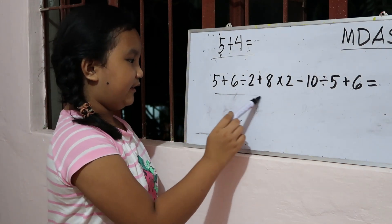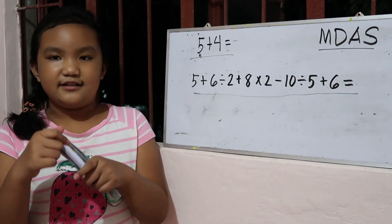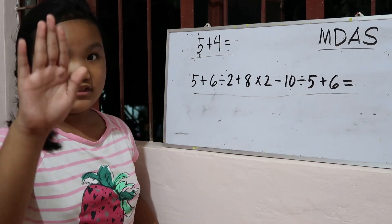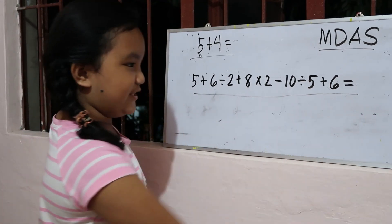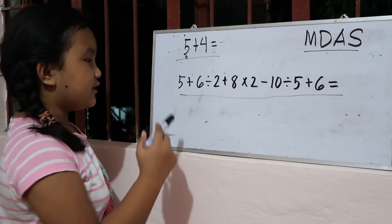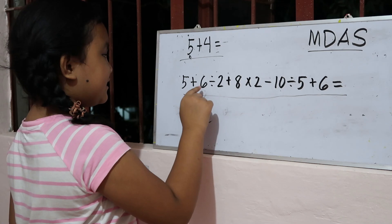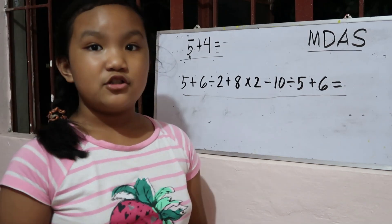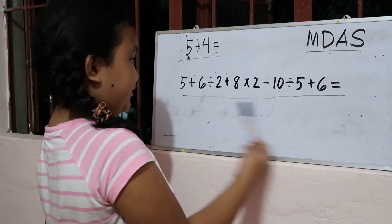Now we have these. It's called a number sentence. I am actually going to write it because you can't read my handwriting. Usually for some people, or at least children, they're just like 5 plus 6 equals to their number and just do this. But there's actually a way to have the right answer, because if you just do that you will have the wrong answer. So you need to do it correctly.